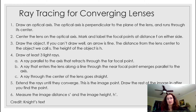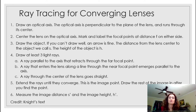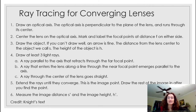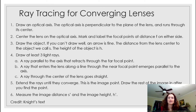Next, draw the object. You don't need to be an artist — we typically represent the object with an arrow. The arrowhead tells us which way is up in both the object and the image. Label the distance from the lens center to the object as s, and the height of the object as h.